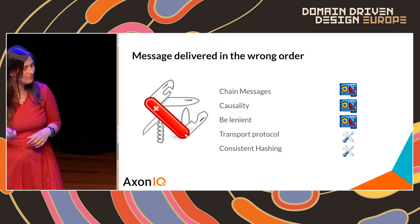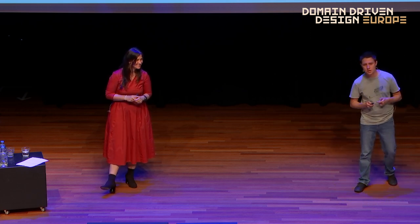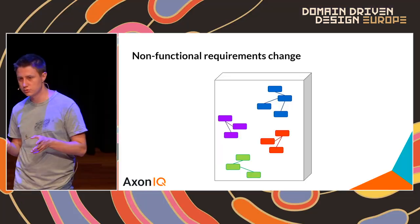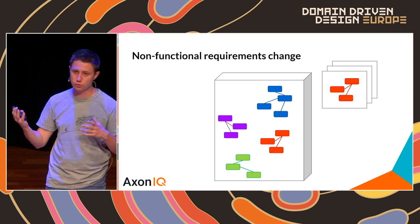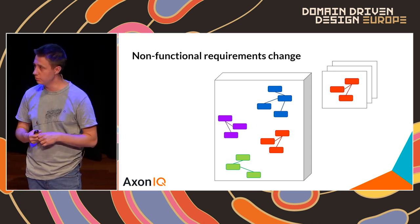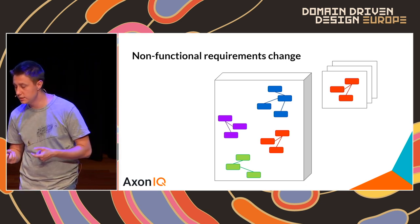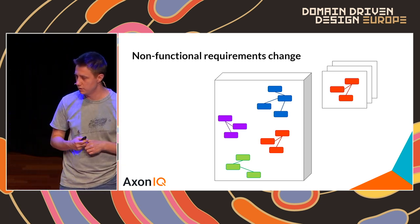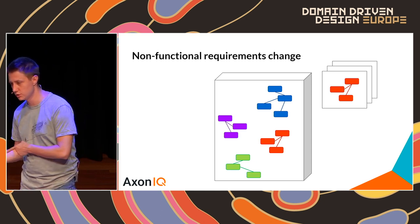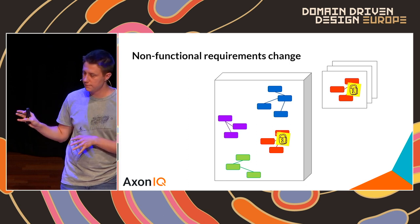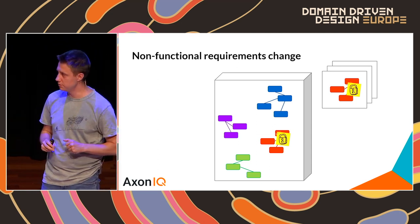It is always a good idea to combine technical solutions like transport protocol and consistent hashing with the design solutions introduced earlier. Now let's tackle another problem: non-functional requirements change. We might want to scale out just one component, or have a separate team own it. What's important is that functional requirements do not change — we want to lock business logic code and keep it the same even when infrastructure changes.